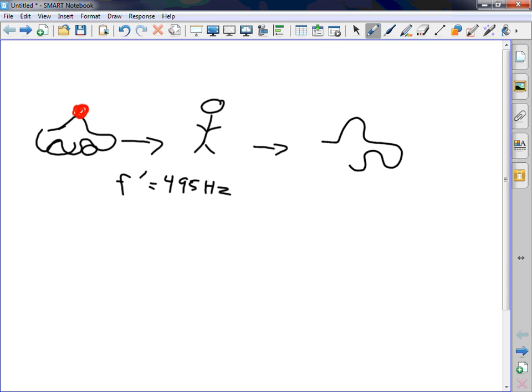You don't know, unless you have some great in-depth knowledge about police cars and what frequency it's supposed to put out. But whenever the car passes you, you get another f prime. Is this f prime going to be higher or lower? Lower. Right? Doppler shift.